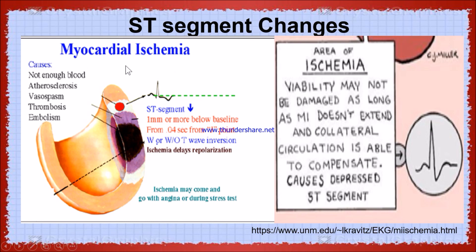When there is ischemia, the ischemic area is denoted here in white color. There is a lack of blood supply due to embolism, coronary artery vasospasm, or increased myocardial oxygen demand. The ST segment always denotes ventricular repolarization. Because of the lack of oxygen supply, there will be decreased ST segment — ST segment depression will be there.